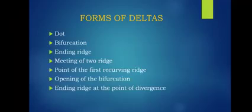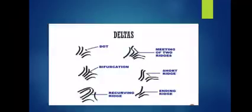There are various forms of deltas: edat, bifurcation, ending ridge, meeting of two ridges, point of the first recurving ridge, opening of the bifurcation, and ending ridge at the point of divergence. Examples of deltas include edat, bifurcation, through-curving ridge, meeting of two ridges, short ridge, and ending ridge.